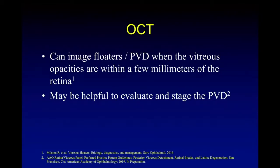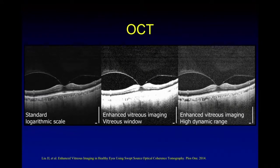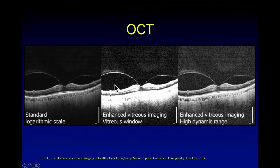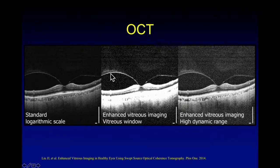OCT is capable of imaging floaters and PVDs, especially if they are close to the retina. If they are very anterior, that's much more difficult to image with OCT. This is an example of partial PVD imaged with OCT — here is the posterior vitreous, which is separated in the parafoveal space but is attached in the center. So there is vitreofoveal adhesion but separation from the rest of the macula.